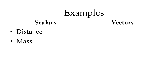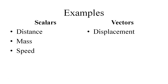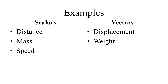Your mass — 60 kg — is just a scalar; it has a value only and no direction. Speed, as I just discussed, is a scalar. Displacement is a vector, weight is a vector, and velocity is a vector.